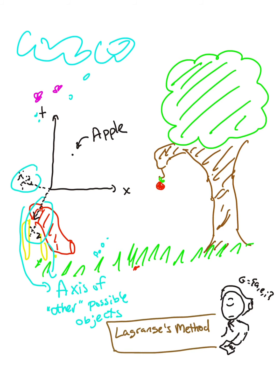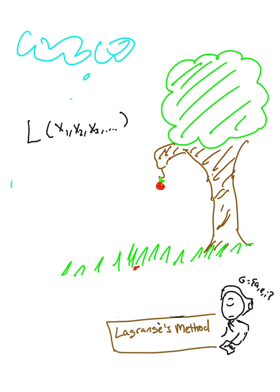Now Lagrange hates forces. So instead of drawing forces that act on the apple, he will instead use a different mathematical object, called a Lagrangian.